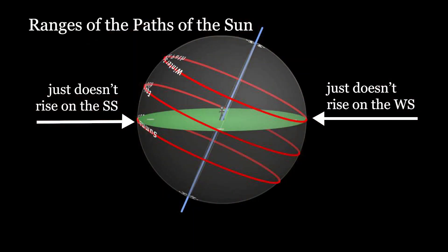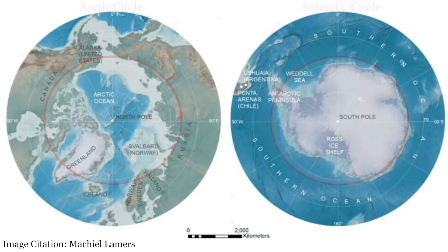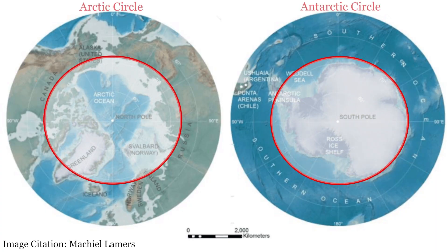The same is also true of the Southern Hemisphere, where the Antarctic Circle is at a latitude of 66.5 degrees south. The phenomena of the midnight Sun and the polar night, which characterize the arctics, occur because of the tilt of Earth.